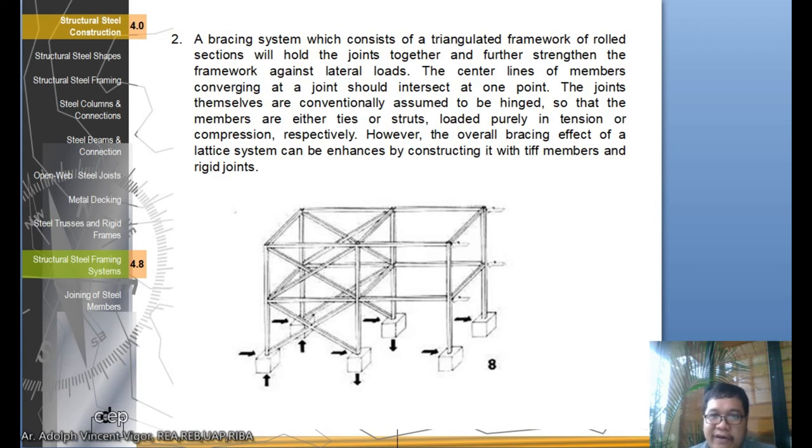Number two: a bracing system consists of a triangulated framework of rolled sections to hold the joints together and further strengthen the framework against lateral loads. The center lines of members converging at a joint should intersect at one point. The joints themselves are conventionally assumed to be hinged so that the members are either ties or struts loaded purely in tension or compression. However, the overall bracing effect of a lattice system can be enhanced by constructing it with stiff members and rigid joints. As you can see here, there's an addition of bracing systems to strengthen the structure. When you design and conceptualize the structure of your building, these are some of the things you're going to consider. When you reach the point of having the details, you're going to compute it, and you'll learn that in your higher engineering science or mathematics.